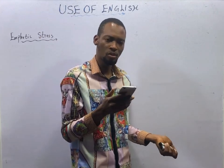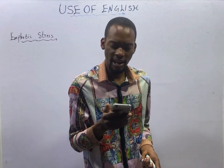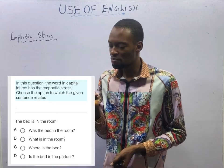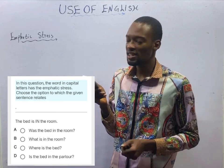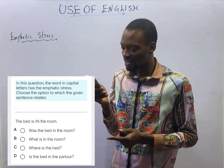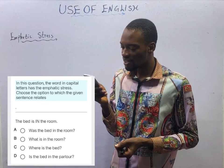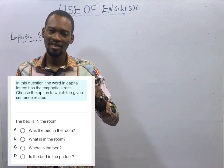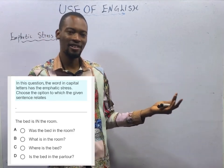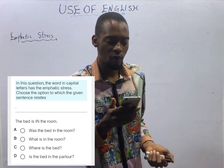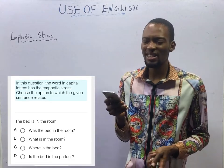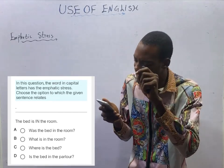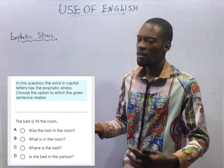The bed is in the room. The emphatic stress is on 'in.' Options A, B, and D contain 'in,' so they can't be the correct answer. Option C is: where is the bed? Where is the bed? — that is a question that can warrant the answer: the bed is in the room, to show you the place. Option C is correct.